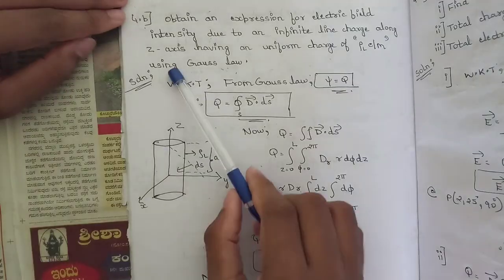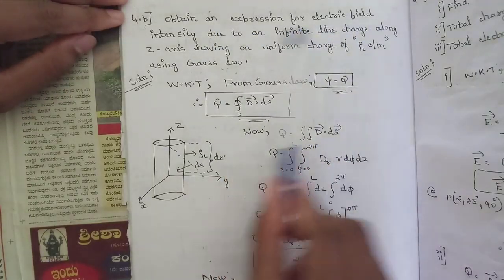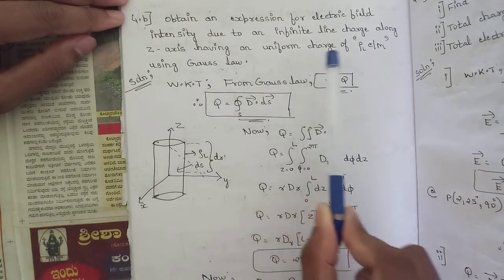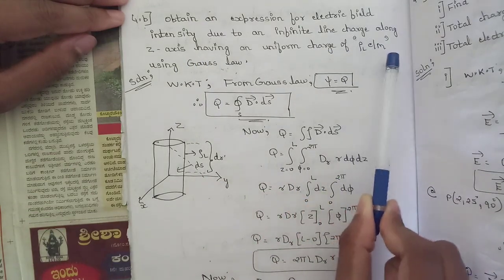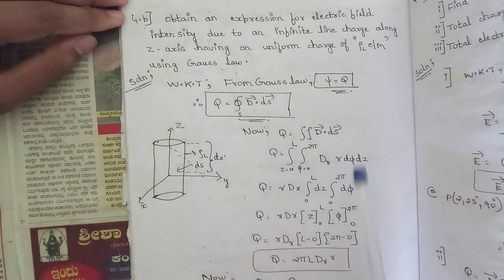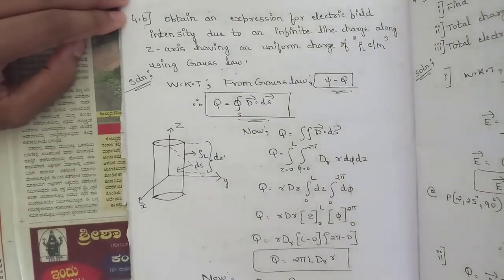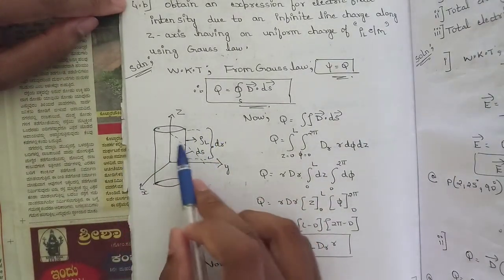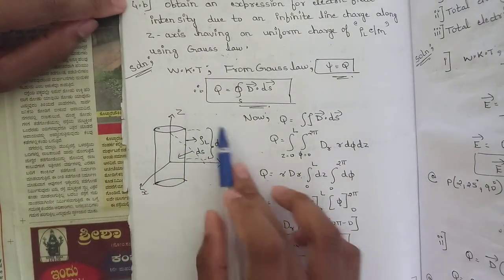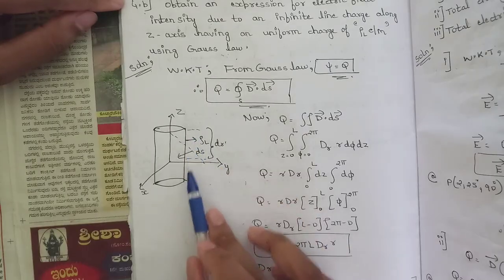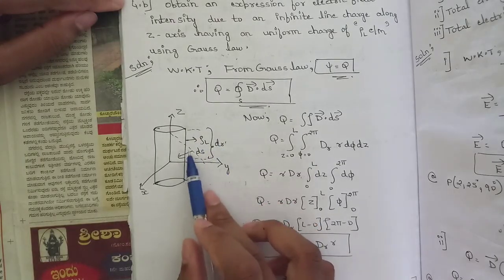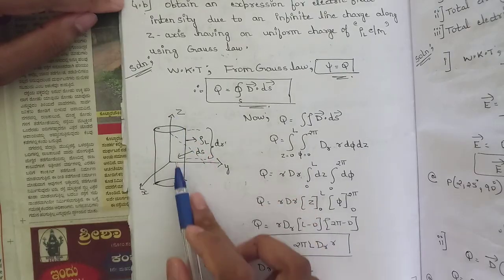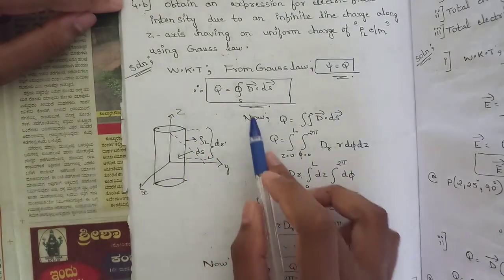The next question asks us to obtain an expression for electric field intensity due to an infinite line charge along the z-axis having uniform charge ρl coulombs per meter using Gauss's law. First, draw a cylindrical surface with respect to the origin and z-axis, where ρl is the line charge density and ρs is the inner surface area.